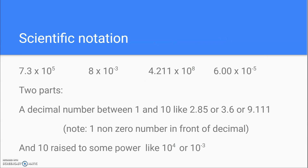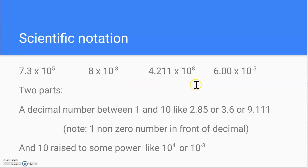So we use something called scientific notation to help us get rid of some of those zeros. Scientific notation is a way to write a number that is a little bit easier and shorter than putting all those zeros in. So let's take a look at numbers that are in scientific notation: 7.3 times 10 to the 5th, 8 times 10 to the negative 3rd, 4.211 times 10 to the 8th, and 6.00 times 10 to the negative 5th. Those are all numbers written in scientific notation.